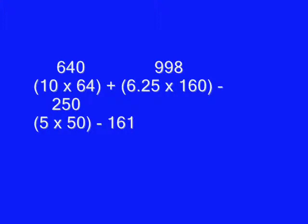Using order of operations, I'm doing the math inside the parentheses first and placing the results above so I can then go through and do all the addition and subtraction. That gives us 640 plus 998 minus 250 minus 161, giving us a resting metabolic rate of 1,227 calories.